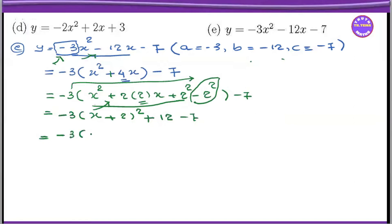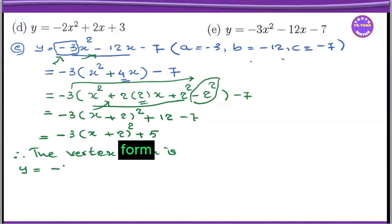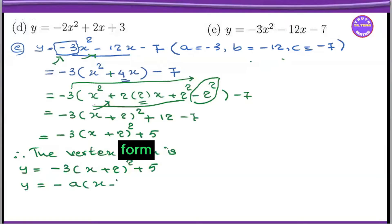So this is minus 3 into x plus 2, the whole square. So this is minus 5 plus 1. So this is the vertex. Therefore, the vertex form is y equal to minus 3 into x plus 2, the whole square, plus 5. So this is the vertex form. Y equals to minus a into x minus h, the whole square, plus k. So this is the vertex form. Here we have the vertex form of h equals minus 2.